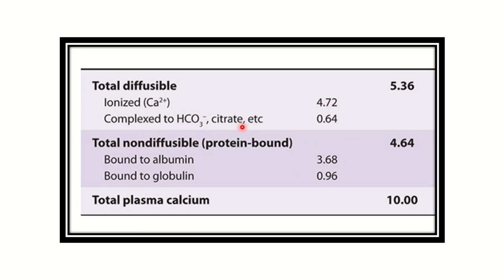Total plasma calcium exists as total diffusible and total non-diffusible fractions. The small amount present in extracellular fluid (0.1%) exists in two types: total diffusible, meaning functionally active calcium (approximately 5.36), and total non-diffusible, which is protein-bound (approximately 4.64). So total plasma calcium is approximately 10.